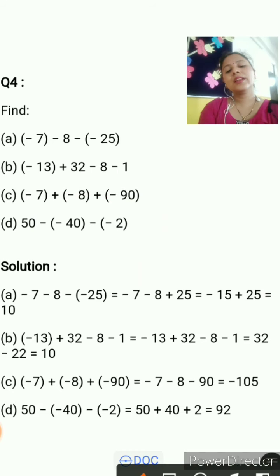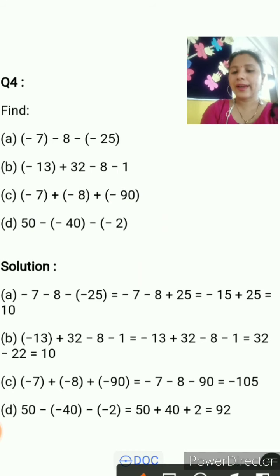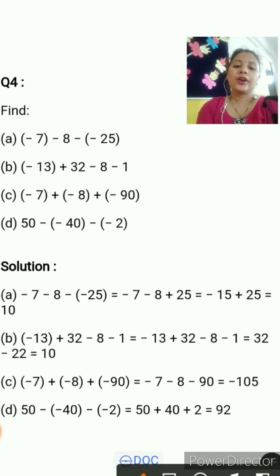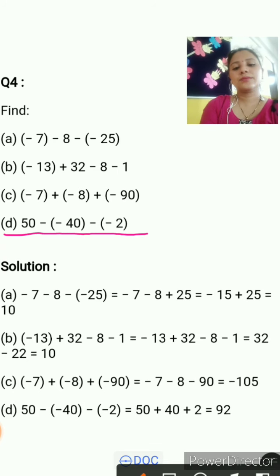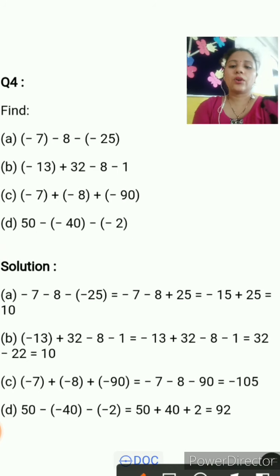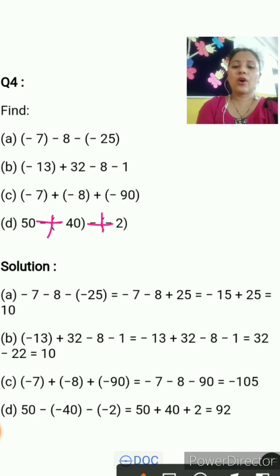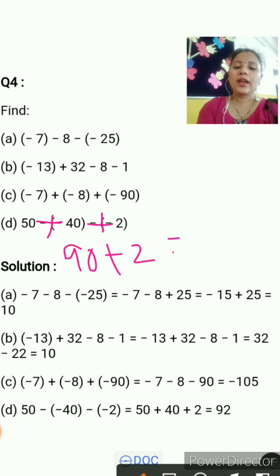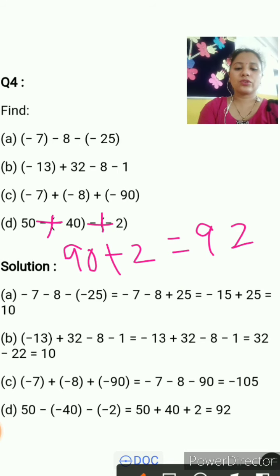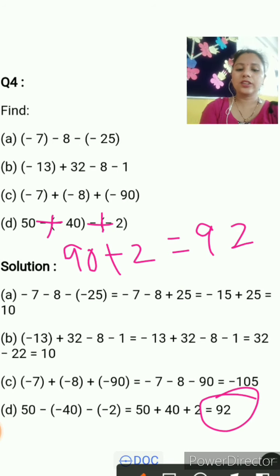The last question of the exercise: 50 minus minus 40 minus minus minus 2. Minus minus becomes plus for both, so you add all three numbers: 50 plus 40 equals 90, and 90 plus 2 equals 92. The final answer is 92.